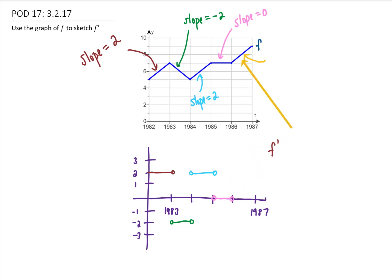Now, looking at our final segment from 1986 to 1987, again, it looks like our graph has a slope of 2. Therefore, the value of the derivative is going to be 2.